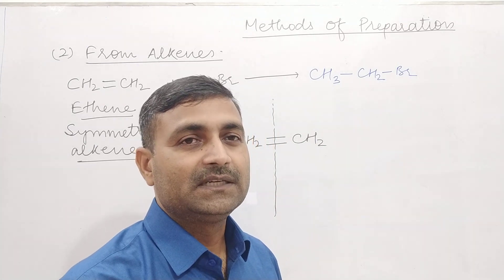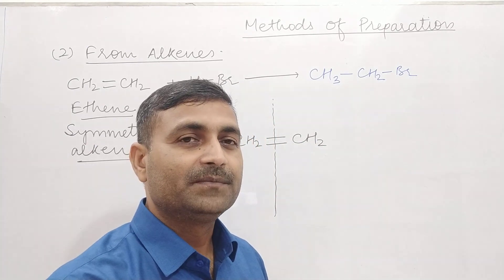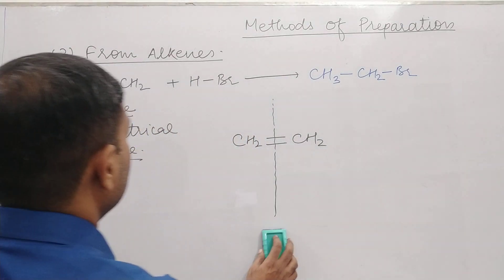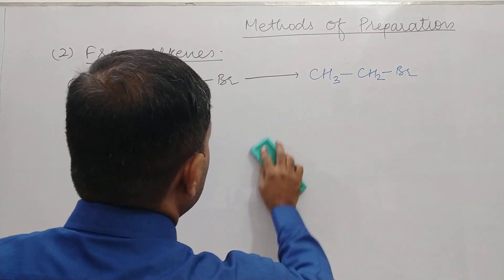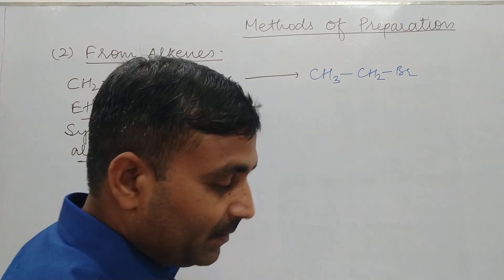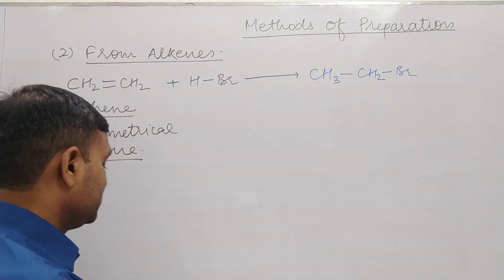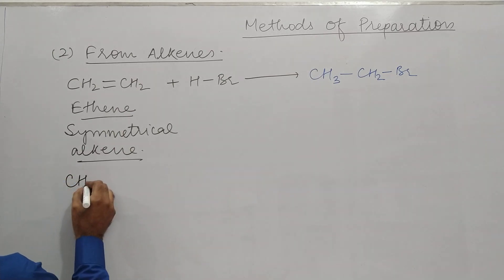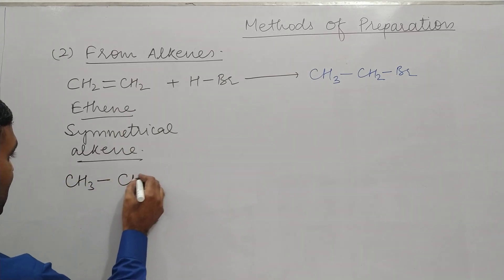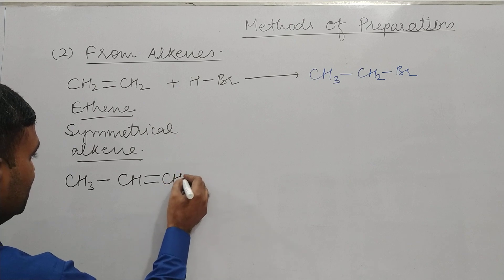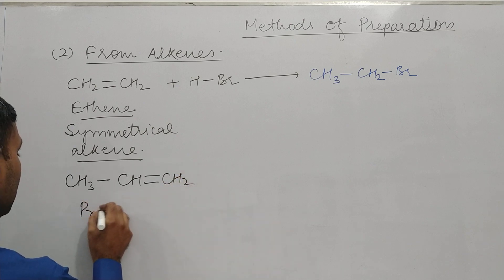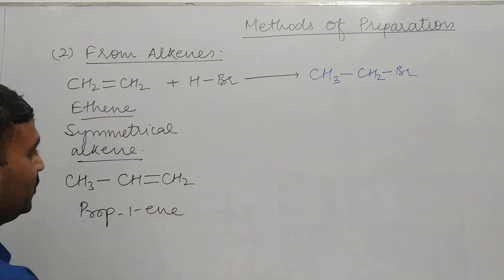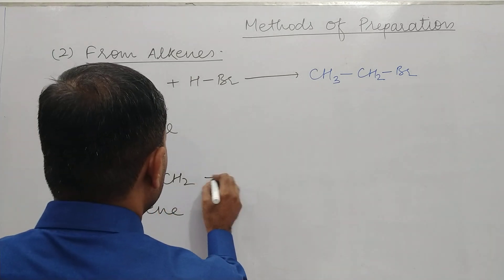If we take an unsymmetrical alkene, then how will we make the product? Let us take an unsymmetrical alkene: CH3–CH=CH2. This is propene and it is an unsymmetrical alkene.